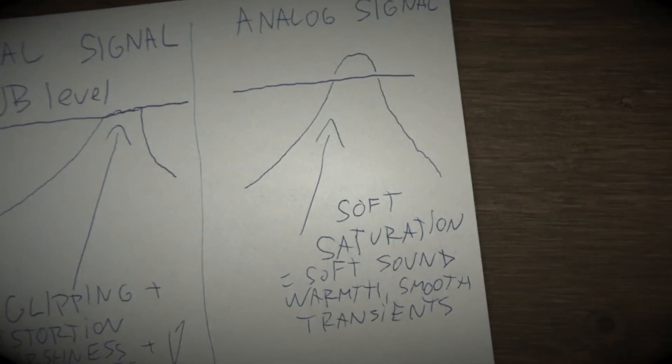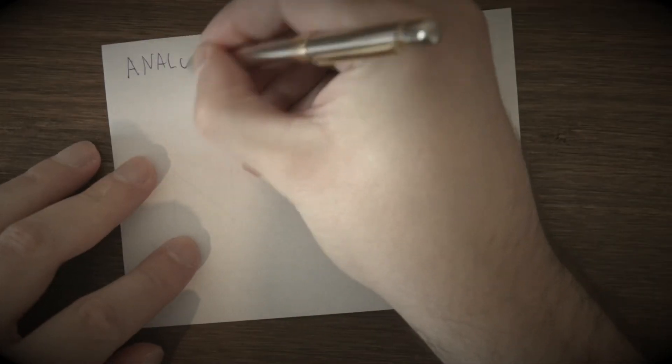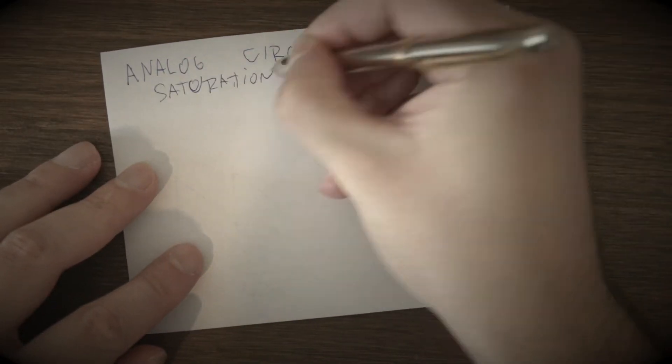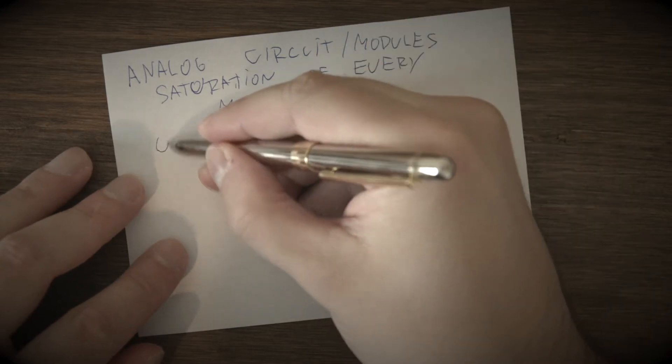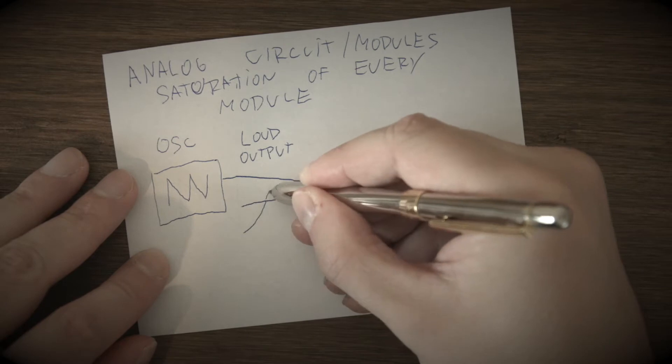Transients are round and pleasant to ears. In real analog circuit, synthesizer, compressor, or equalizer, not just loud output is saturated, but various individual modules are saturated separately at its input and output stages.